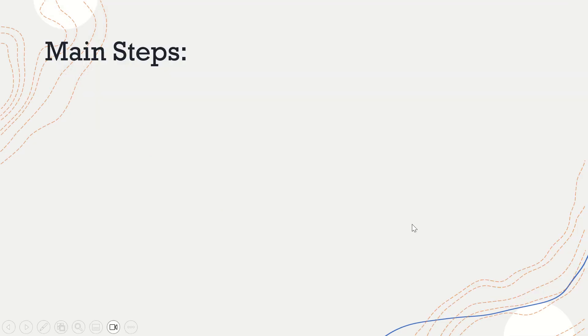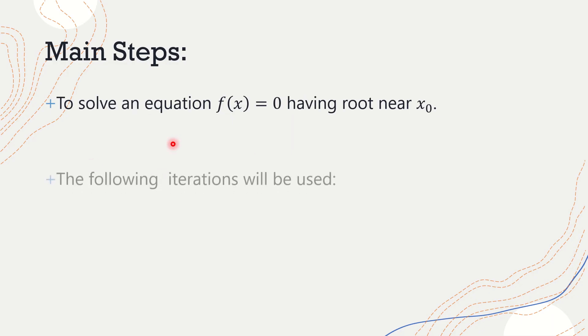The main steps are: first you would need to express a given equation in the form f(x) = 0, and we assume that it has a root near x₀. That's the initial value from where we would start the iterations of Newton-Raphson method.